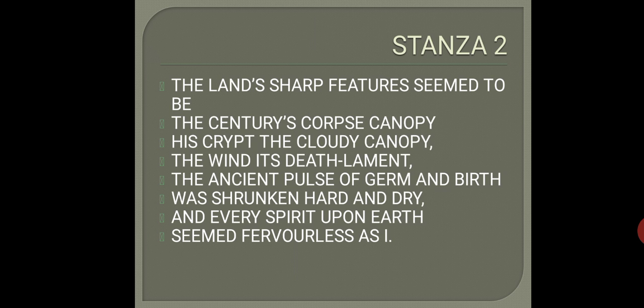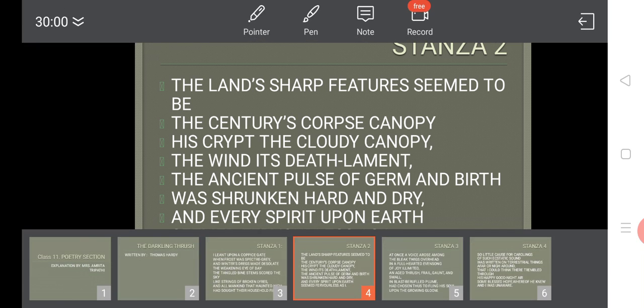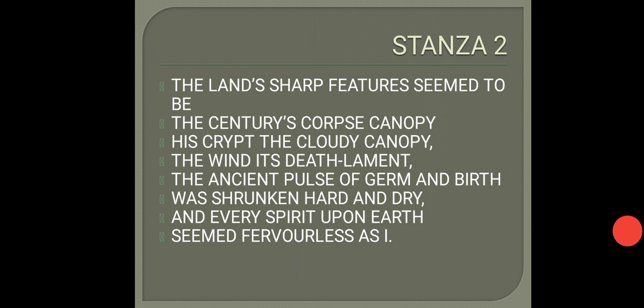In this stanza, he talks about the death of the 19th century. As this poem was written on the 29th of December — the end of the 19th century — he calls the land's features the corpse and dead body of the 19th century, ready to be buried. The clouds form a canopy or tomb providing a burial place, the blowing wind sings a death song, and the natural process of germination has slowed down, with the seed of spring inactive and all life forms at a standstill, including the poet himself.